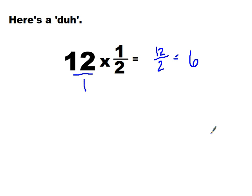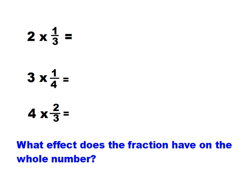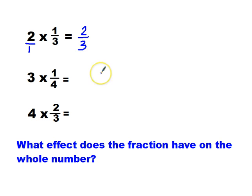Why is that? Well, what this problem was asking you is what's half of 12? Half of 12 is 6. Yeah, I multiplied but I got smaller. Does that seem kind of random? Let's look at some more examples. These three are in the left-hand column. Here, I've got 2 times 1 third. Let's put this over 1. 2 times 1 is 2, 1 times 3 is 3, and 2 thirds is definitely smaller than two wholes. Again, I'm multiplying but I'm getting a smaller number as my answer.